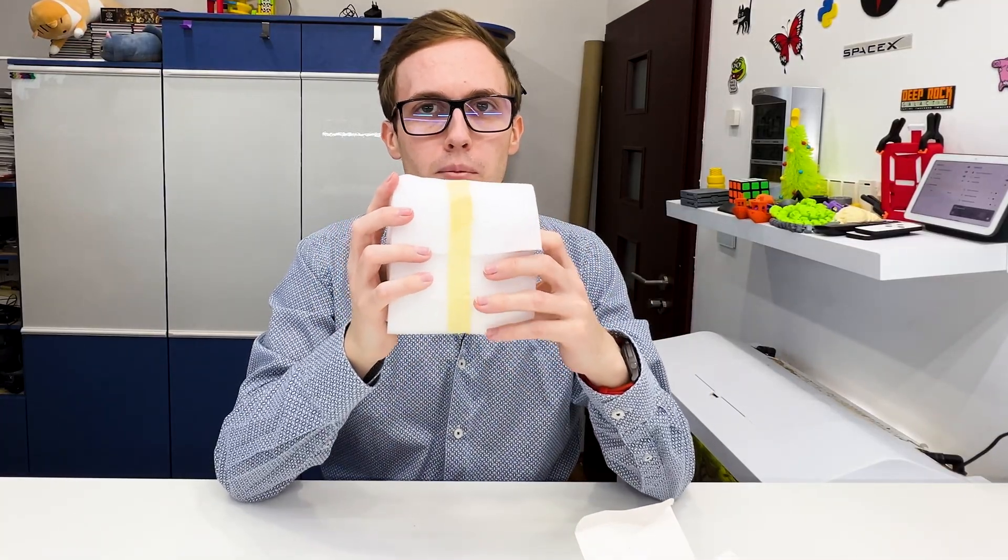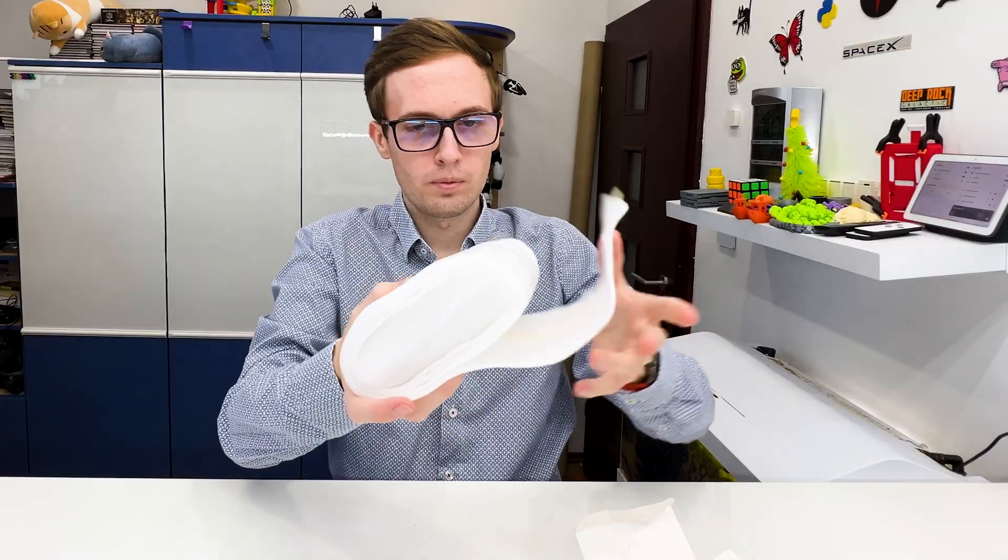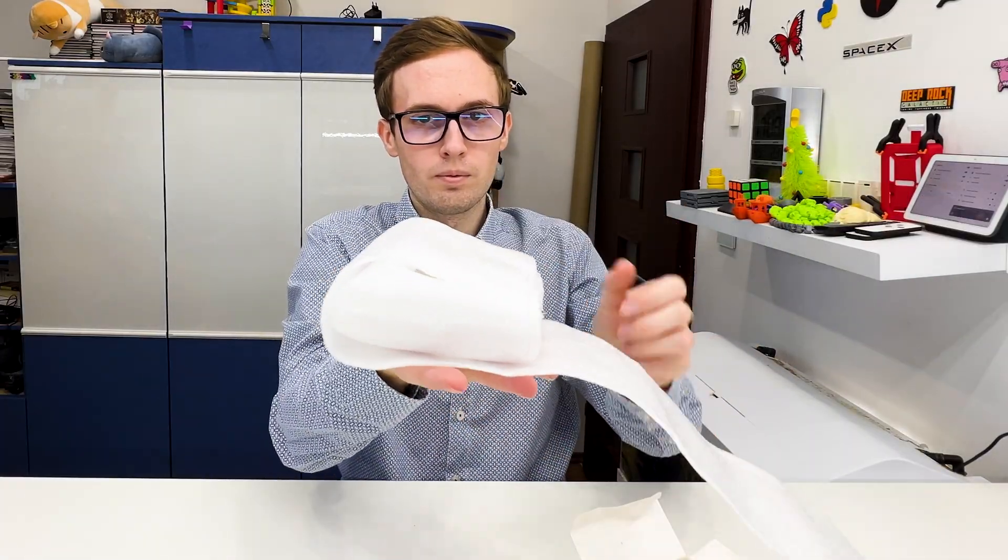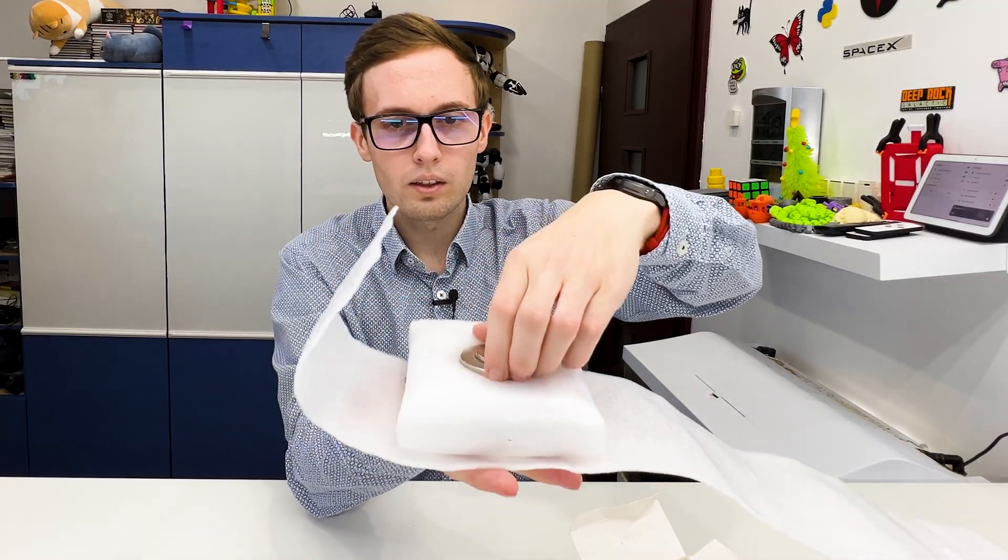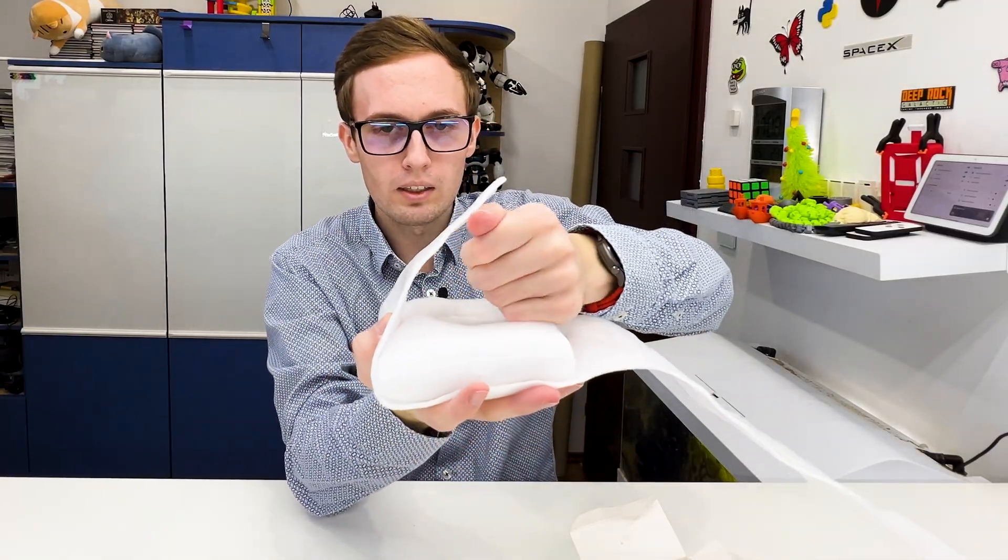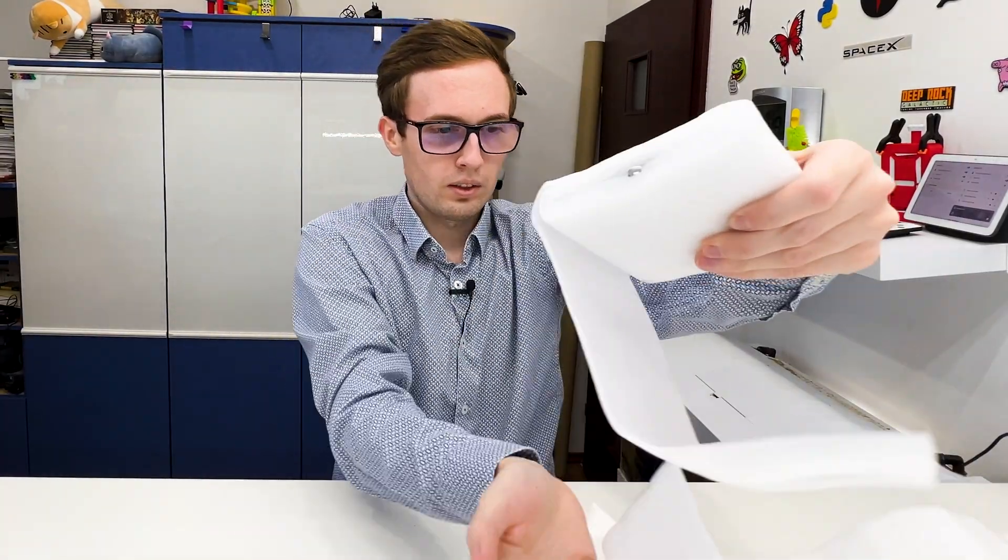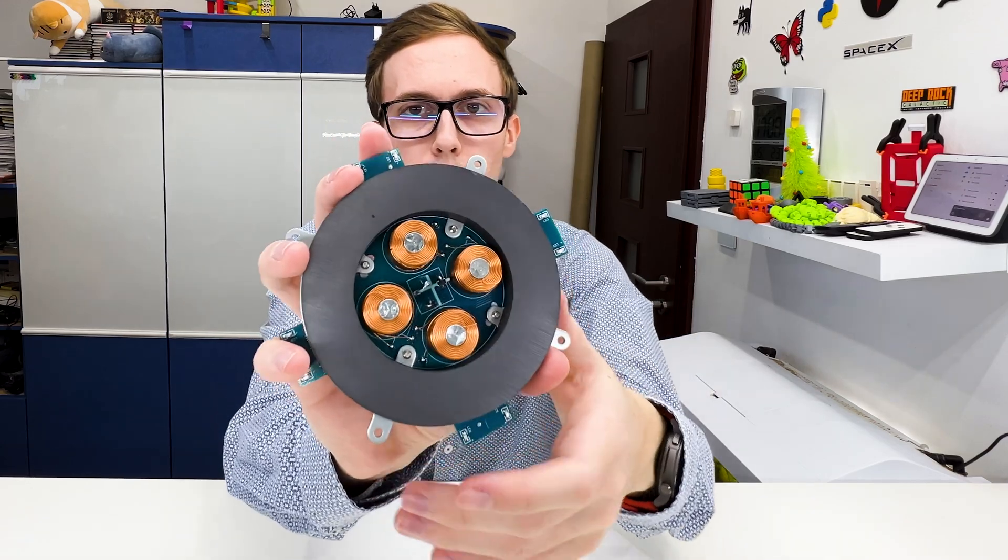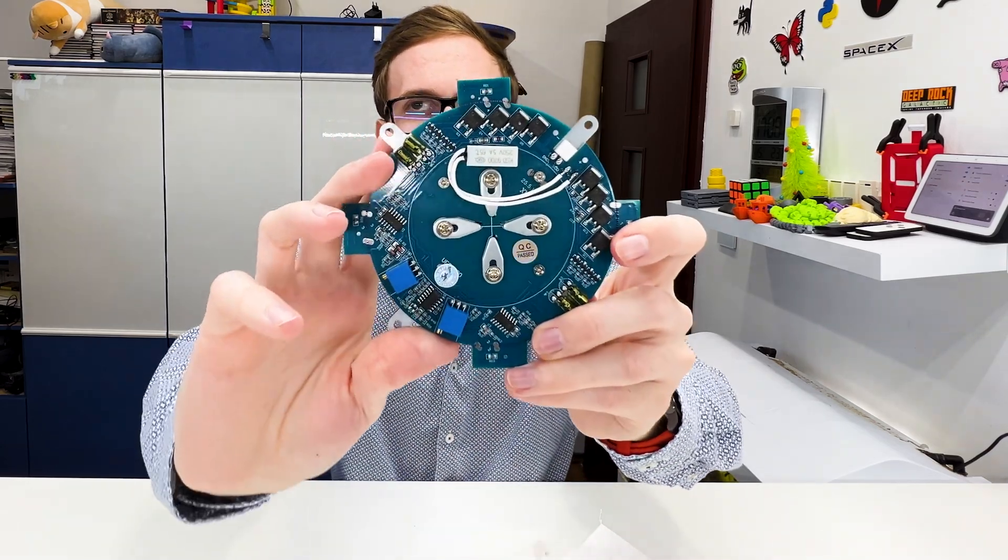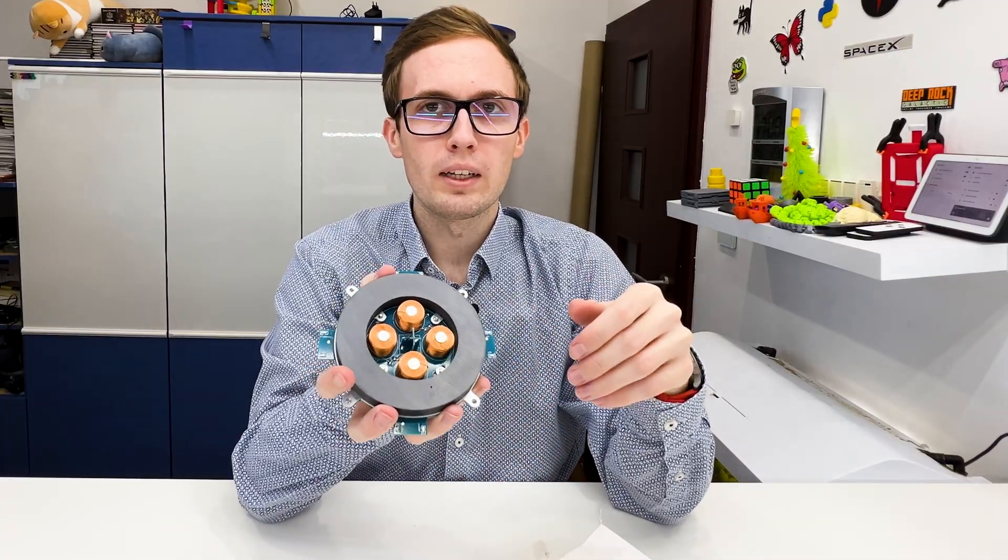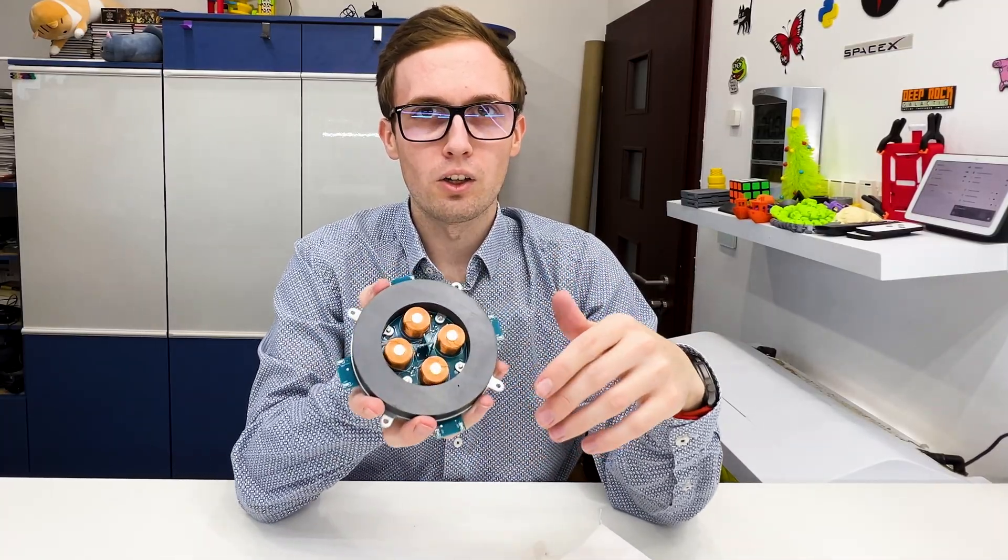Now let's see this main module. Quite well protected. Here we have a magnet on the top, and below, more layers of protection. And this is the main module. We can see the electronics.